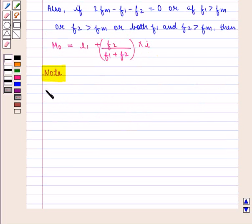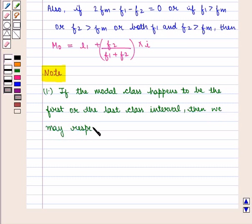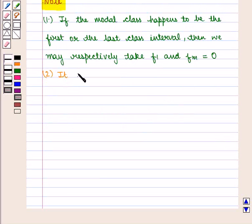Here we should note that if the modal class happens to be the first or the last class interval, then we may respectively take F1 and Fm equal to 0.